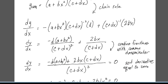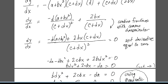To combine the two fractions, we multiply the right fraction's numerator by (c + dx) to get a common denominator. This gives a single combined fraction. Setting it equal to zero, only the numerator matters. Combining the two x-squared terms, we get an equation solvable by the quadratic formula.